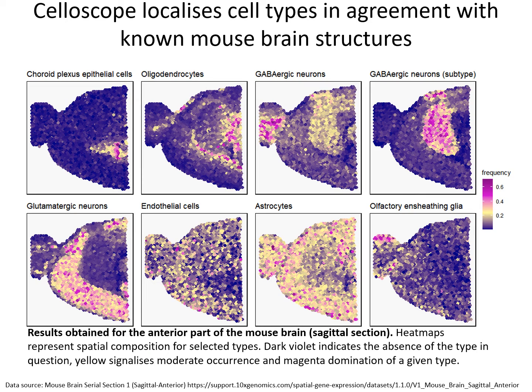Celloscope was applied on mouse brain data and was able to successfully indicate brain structures. Celloscope is able to spatially distinguish between two main neuron types: inhibitory, also known as GABAergic neurons, found mainly in the olfactory bulb and in the olfactory cortex, and excitatory, also known as glutamatergic neurons, that were detected mainly in the cerebral cortex.